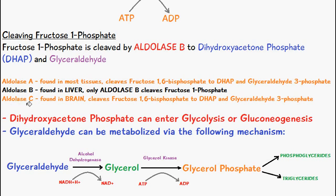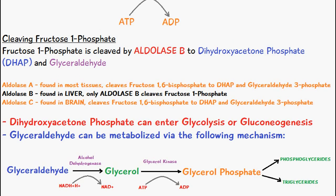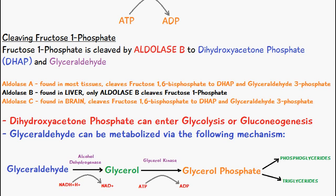Aldolase C is found in the brain and it cleaves fructose-1,6-bisphosphate to dihydroxyacetone phosphate and glyceraldehyde-3-phosphate. Aldolase B is what we use for fructose metabolism, it's found in the liver, and only aldolase B cleaves fructose-1-phosphate.